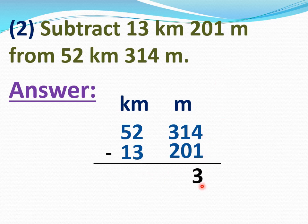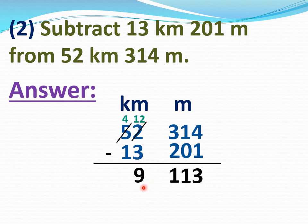4 minus 1 is 3. 1 minus 0 is 1. 3 minus 2 is 1. Now see, this 2 is smaller than 3, so we will borrow from the next number. This 5 will become 4 and this 2 will become 12. 12 minus 3 is 9. 4 minus 1 is 3. Answer is 39 kilometers 113 meters.